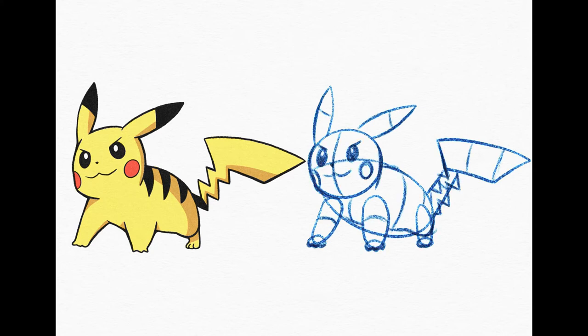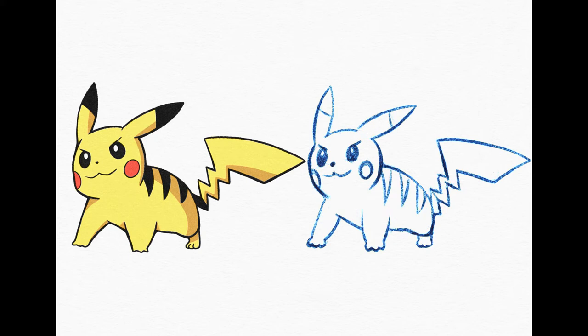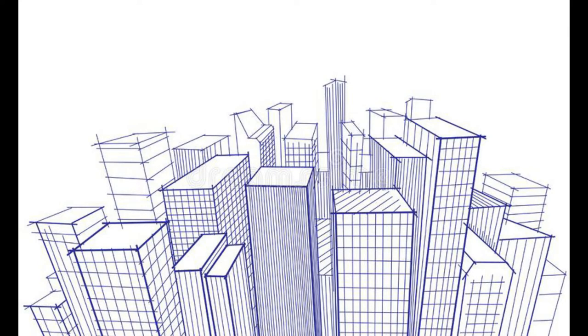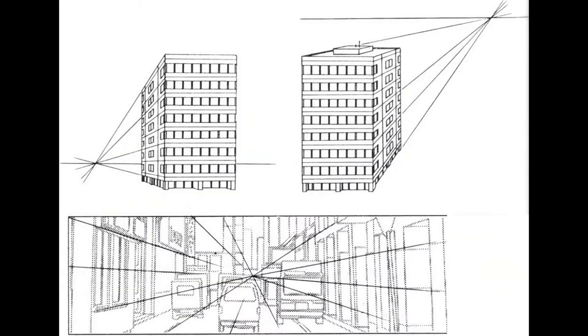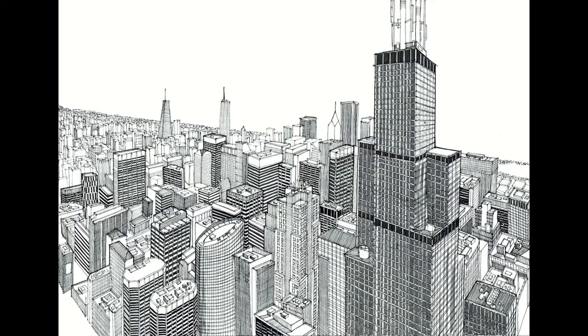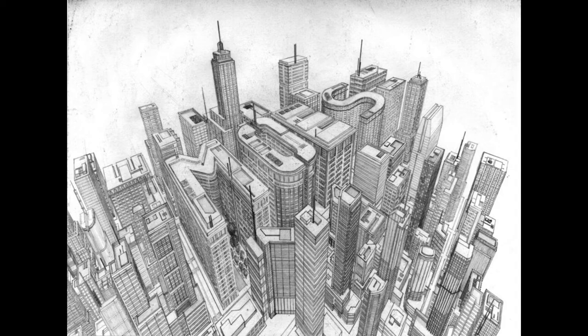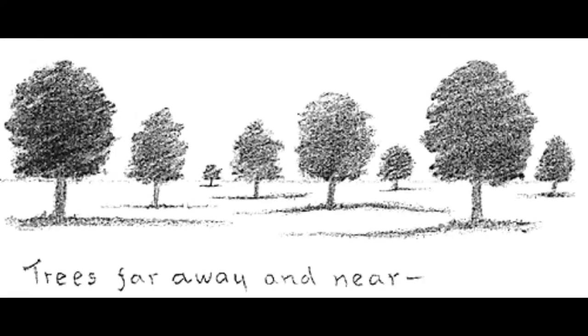We can finish the drawing by erasing the construction lines we don't want and adding shadow. When drawing backgrounds like a cityscape, you're going to want to know what your shapes look like on all sides — this is why knowing what your subject looks like from any point of view is important.